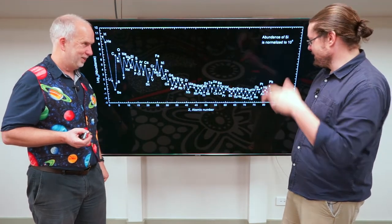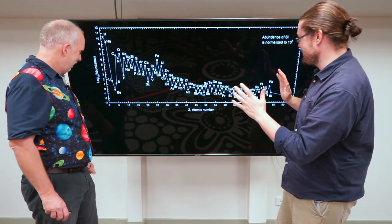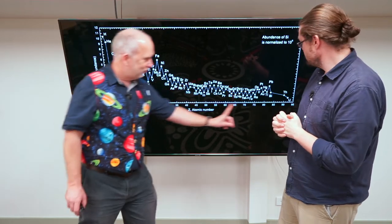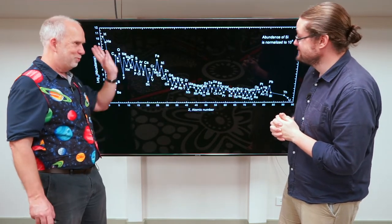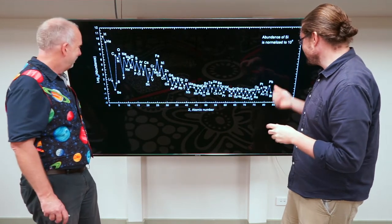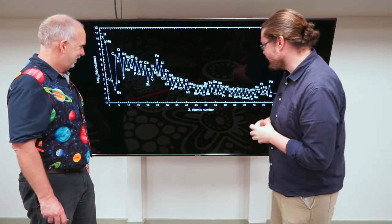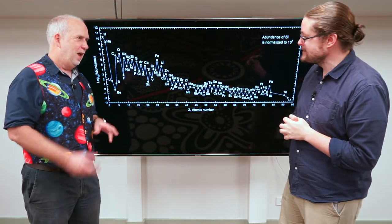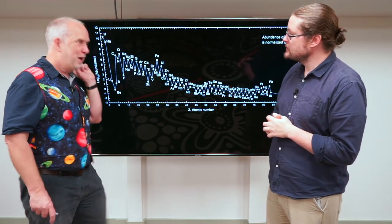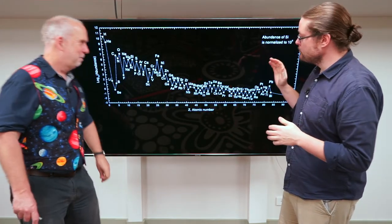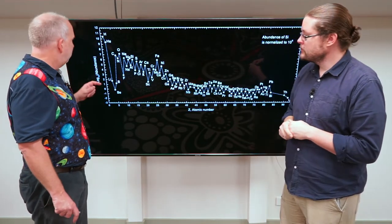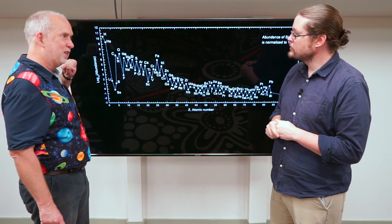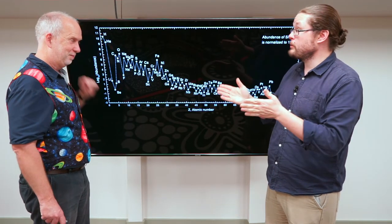Here we have what the Sun is made of. There's a lot of stuff going on here. This is all the different elements of the periodic table - hydrogen, helium, lithium, beryllium, boron, carbon, all the way through. You can see absorption lines from every one of these. This is in log, log of abundance.